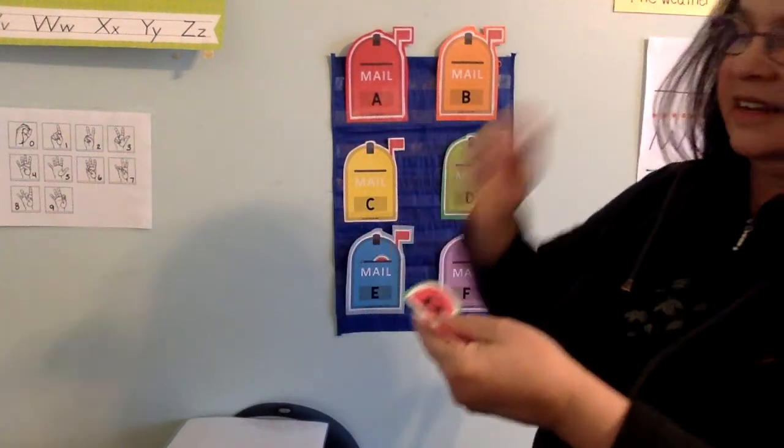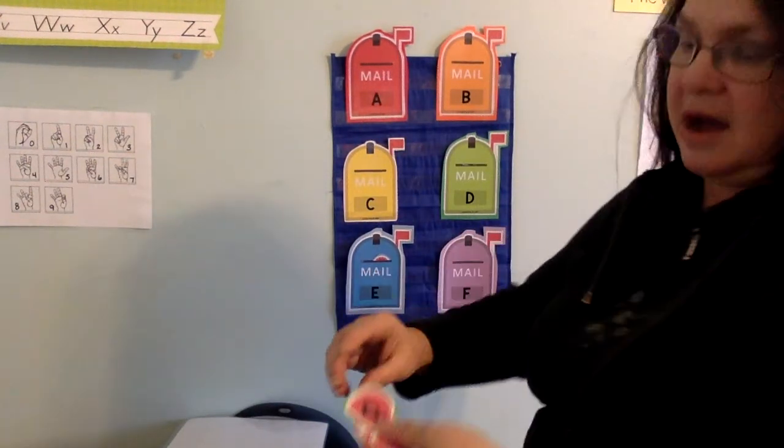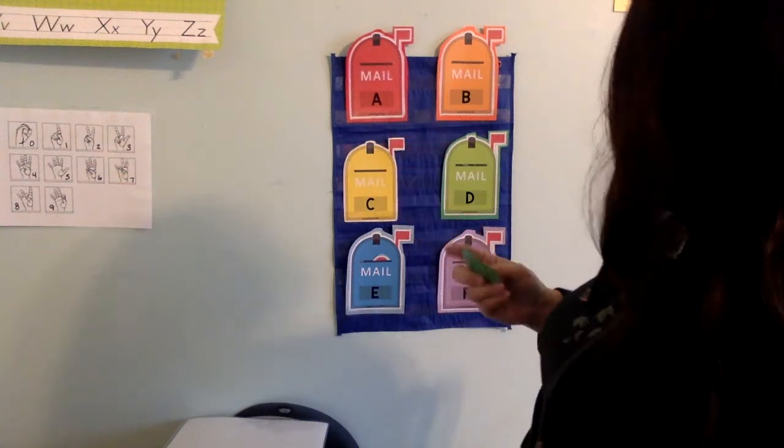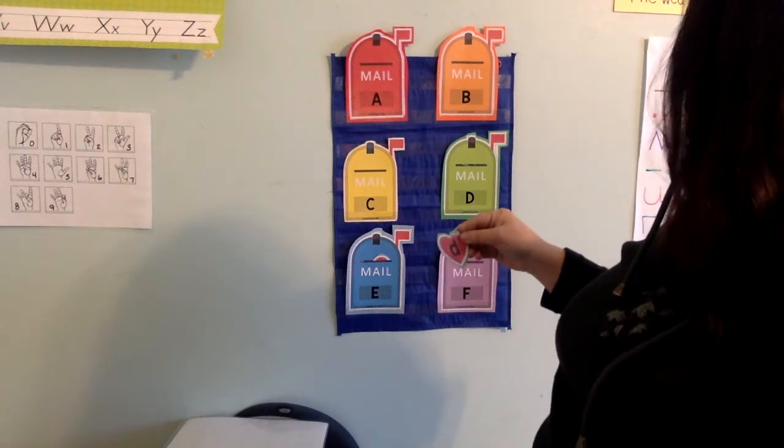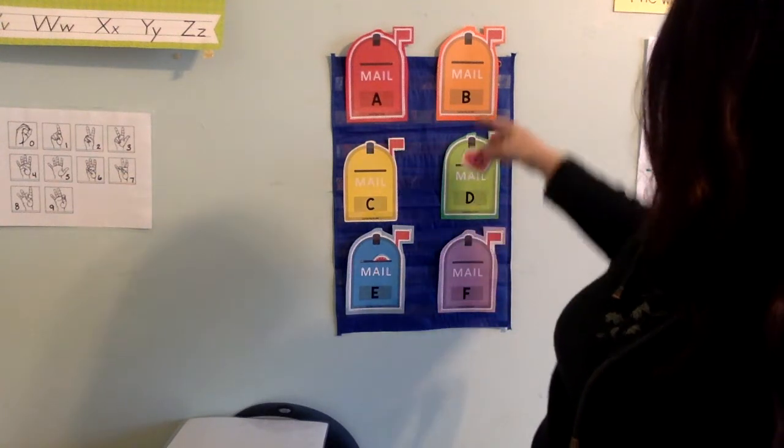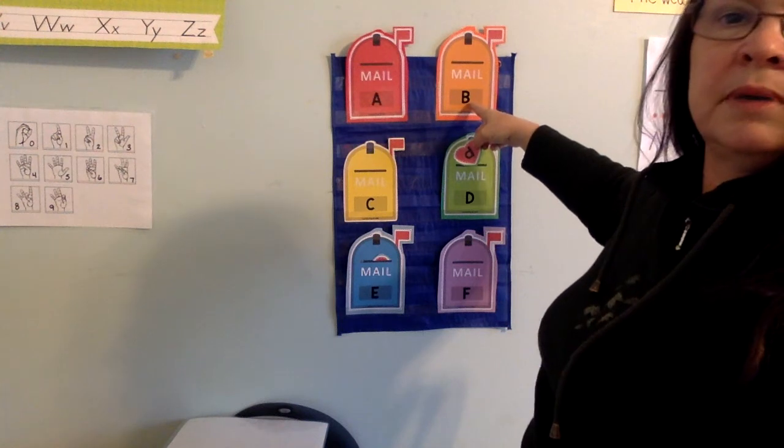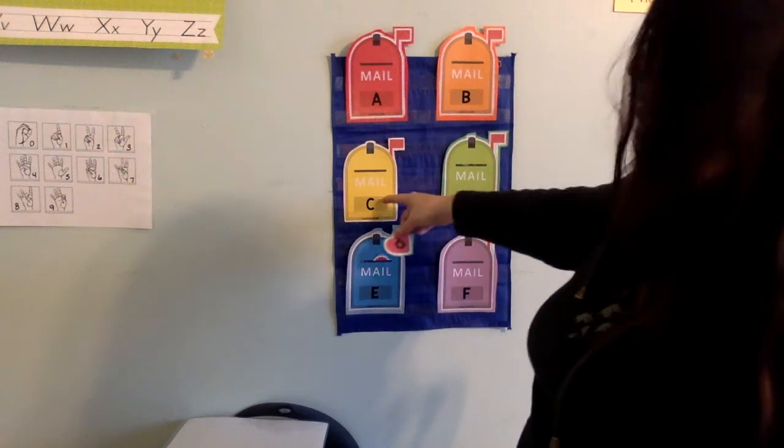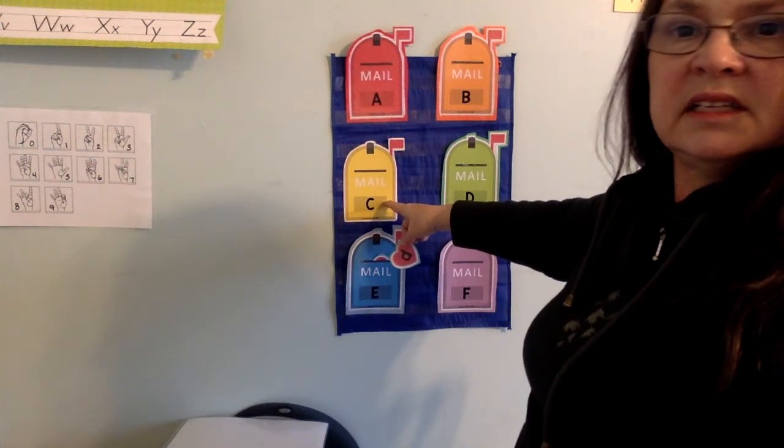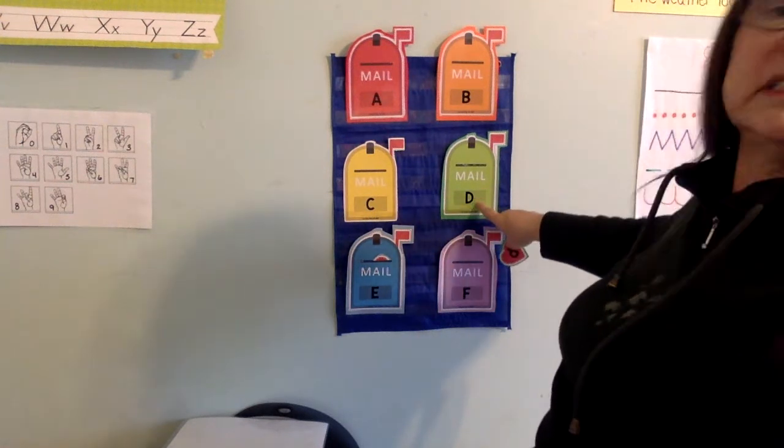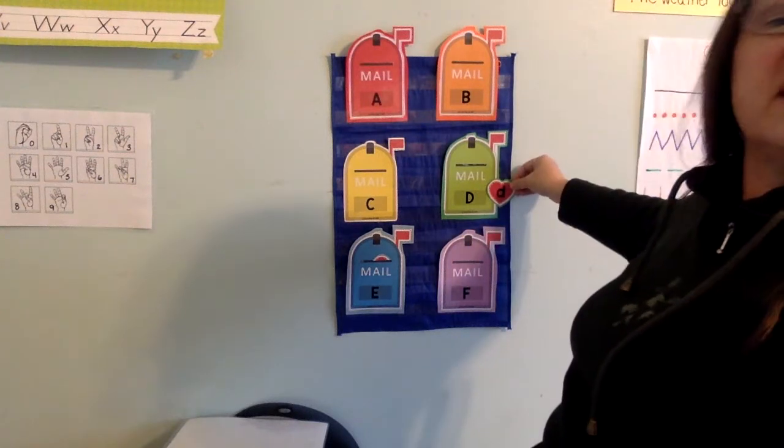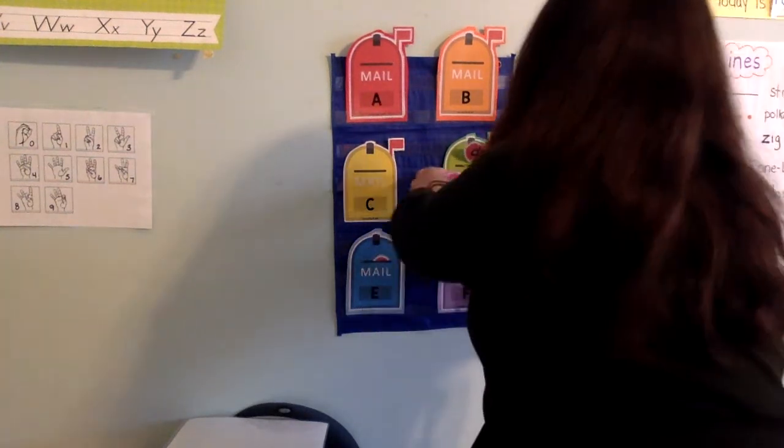All right, and it's the blue mailbox. What letter is this, lowercase letter, D. That's right, let's see, what mailbox, where's the uppercase D? B, this is B, no. C, no. How about this one? D, this is the uppercase D and the lowercase D. It goes in the mailbox.